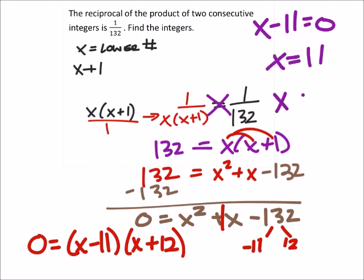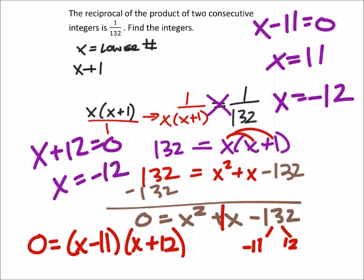But also that would have... let me show the work on that. x plus 12 equals 0. So subtract 12 from both sides, x equals negative 12.